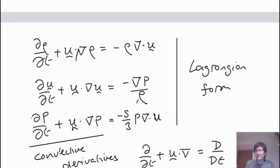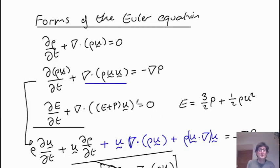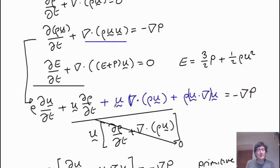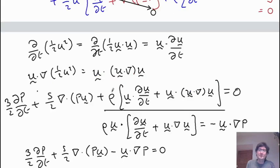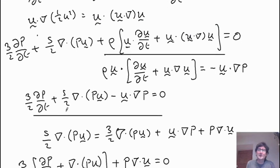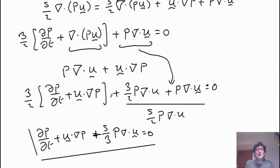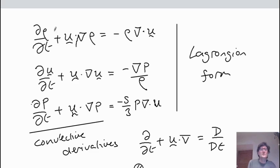So hopefully this has shown you some different ways of writing the Euler equations. We started with conservation forms, where everything is expressed as a divergence of a flux — flux of mass, momentum, and energy. Then the primitive forms, written in terms of flow velocities and pressures. And finally the convective derivative Lagrangian forms, where everything is written in terms of the change as you follow the fluid. All these forms have different uses and are just variations on the same ideas. Thank you very much, see you next time.